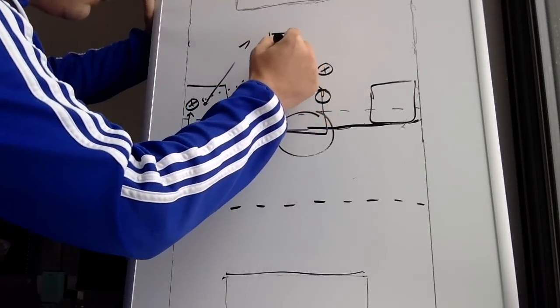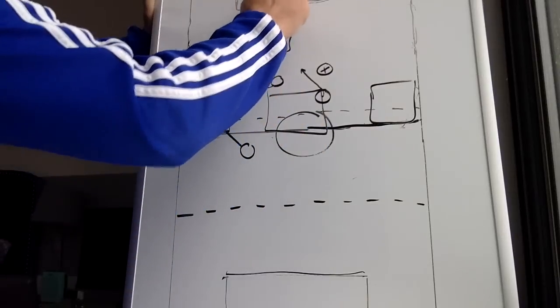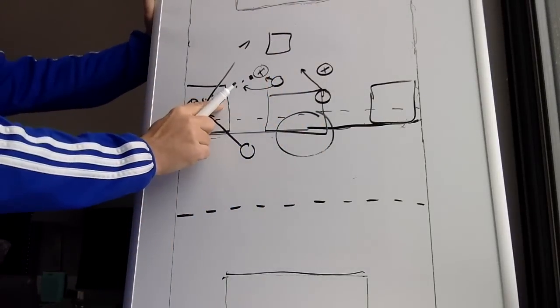One ball in, forward goes, should be a good counter attack right there. And that's a pressing area.